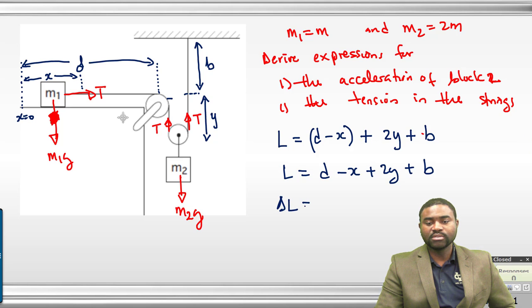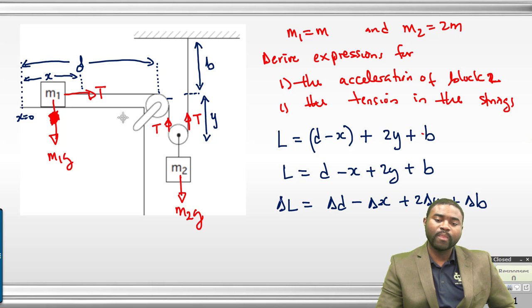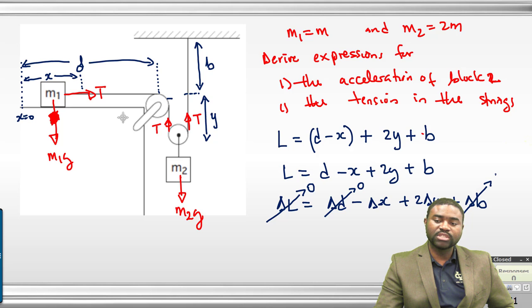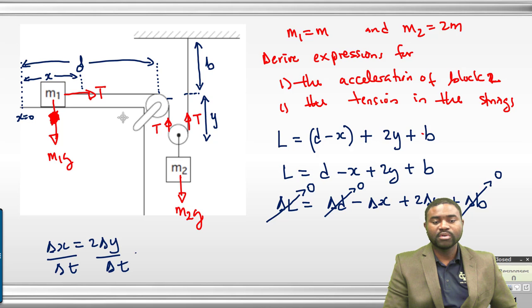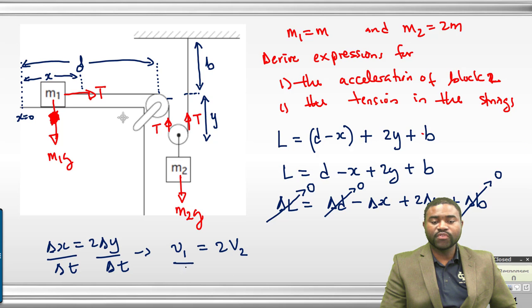The change in L equals the change in D minus the change in X plus 2 times the change in Y plus the change in B. L is constant so that is 0. D is constant, so this is 0. B is constant, so this is 0. This tells us that the change in X equals 2 times the change in Y. Dividing both sides by T, V of mass 1 equals 2 times V of mass 2. Dividing again by T, A of mass 1 equals 2 times A of mass 2.